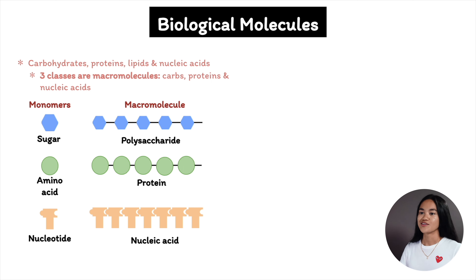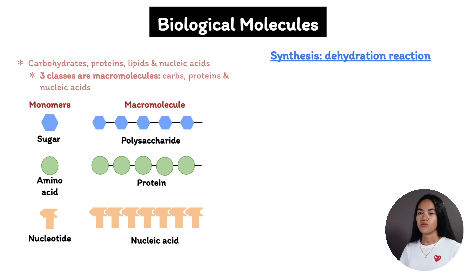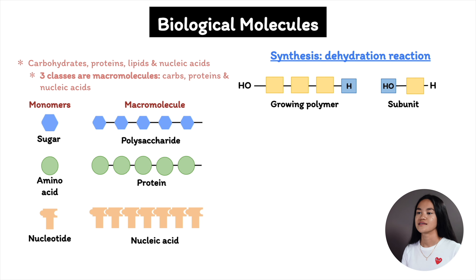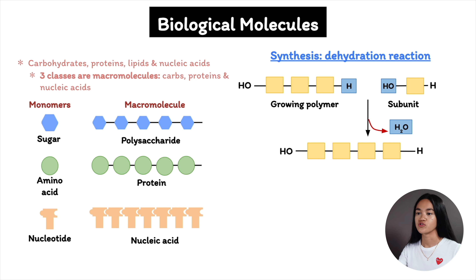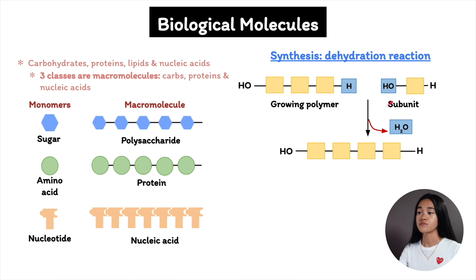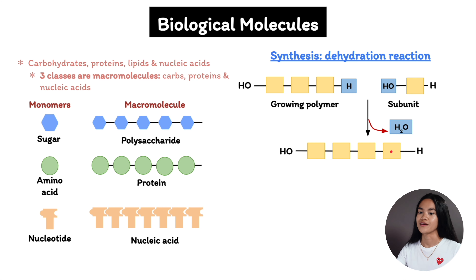Monomers or two molecules are connected together via a condensation reaction, which involves two molecules covalently bonded to each other. If a water molecule is lost, this is known as a dehydration reaction. Each monomer contributes a part of the water molecule that is released — one monomer provides the hydroxyl group while the other provides a hydrogen. This reaction is repeated as new monomers are added to the chain, forming a polymer.